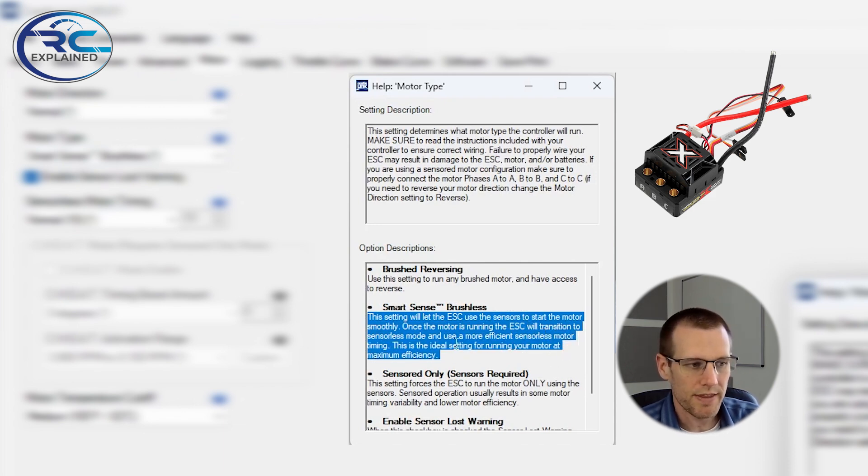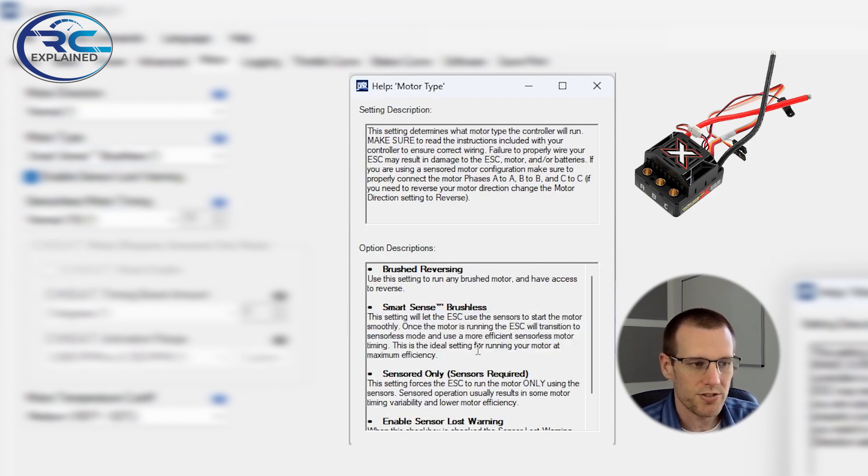So this setting will let the ESC use the sensors to start the motor smoothly. Once the motor is running, the ESC will transition to sensorless mode and use a more efficient sensorless mode type timing. This is ideal for running your motor at maximum efficiency. And that's key.